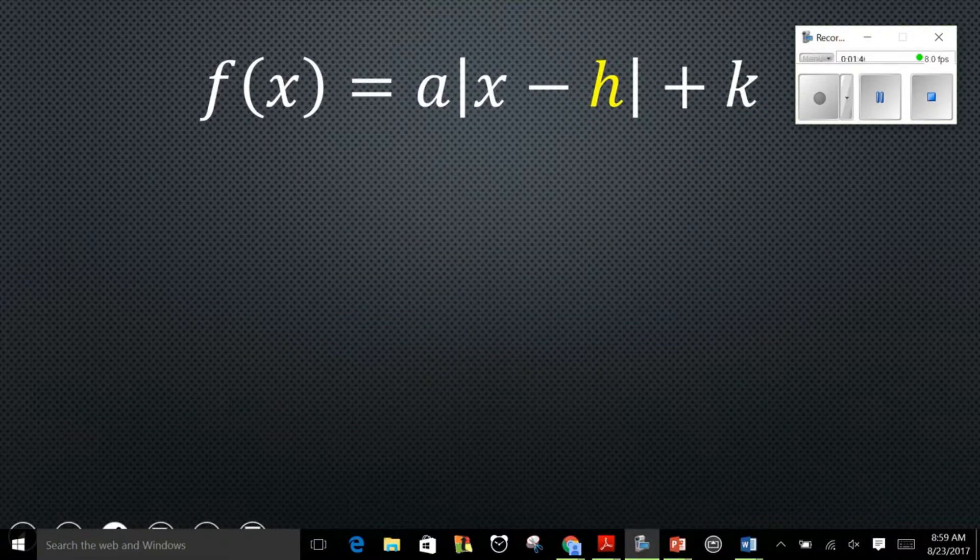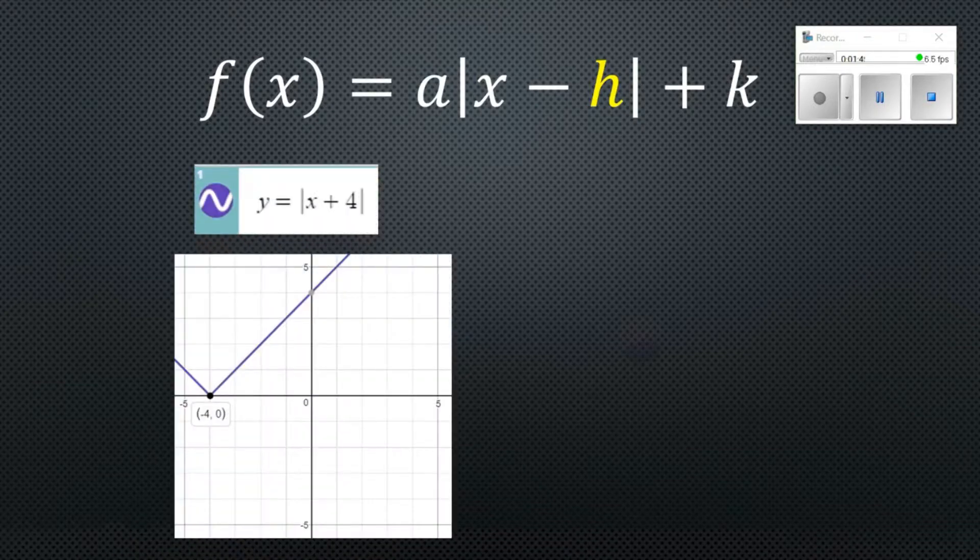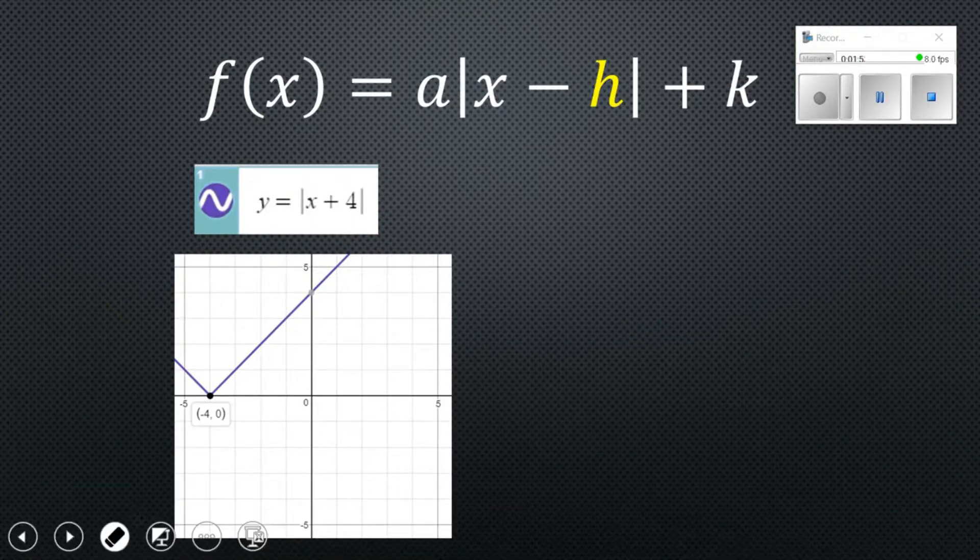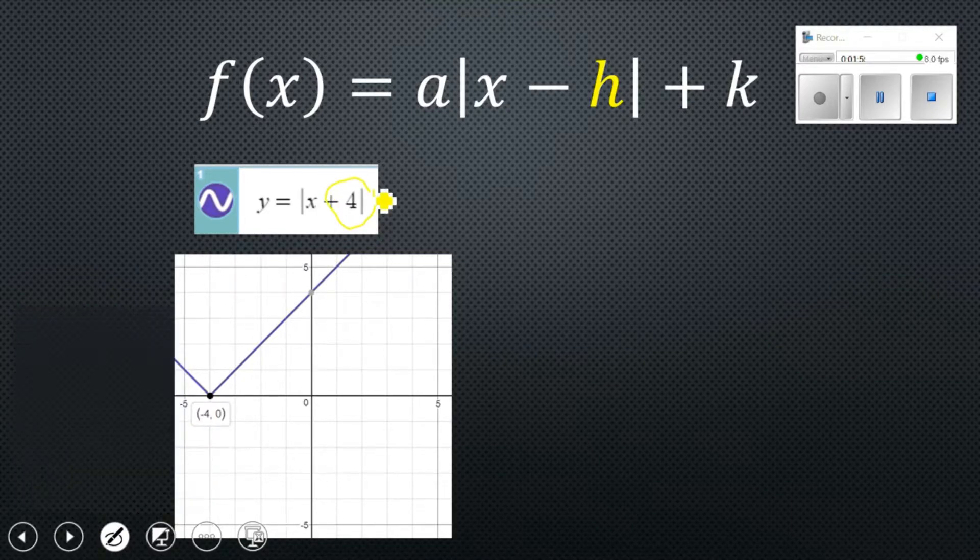Next we're going to look at what the h value does or the number added or subtracted to x within the absolute value symbol. A couple examples here for you. If we do absolute value of x plus 4 with the plus 4 being on the inside, that is going to move it actually counterintuitively left 4 units.